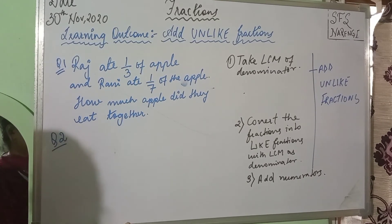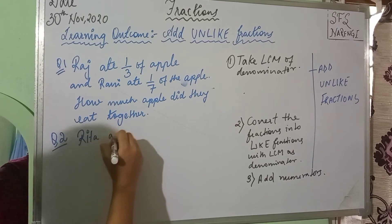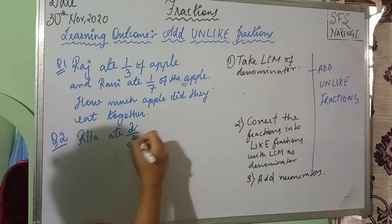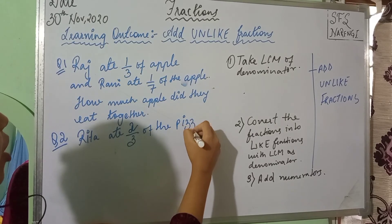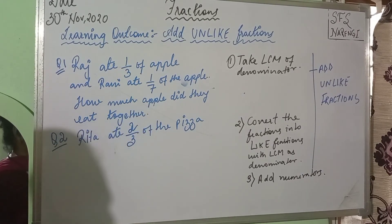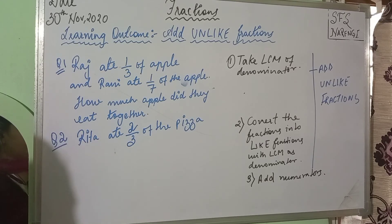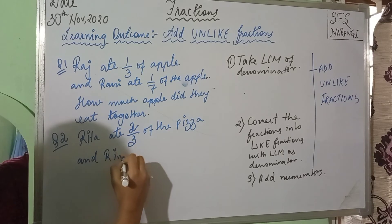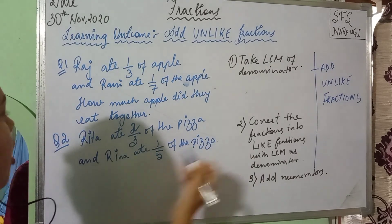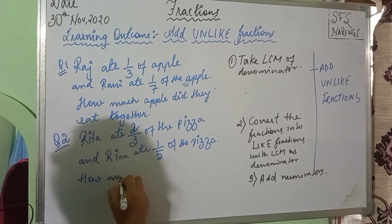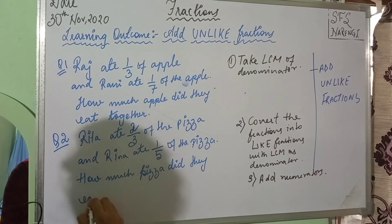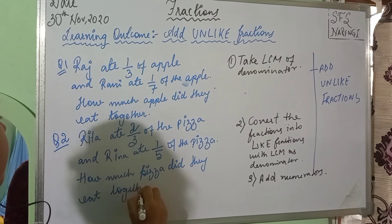Question number two is: Rita ate two thirds of the pizza and Rina ate one fifth of the pizza. How much pizza did they eat together?